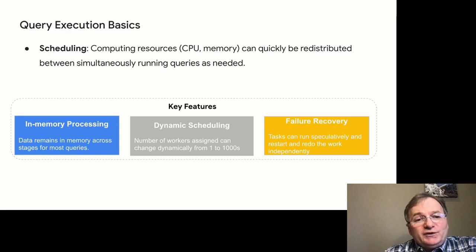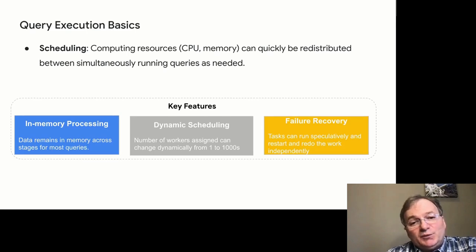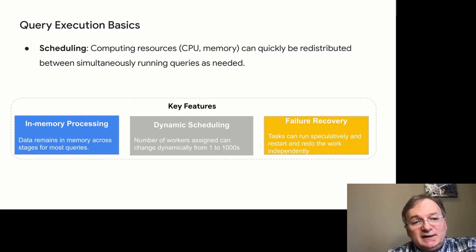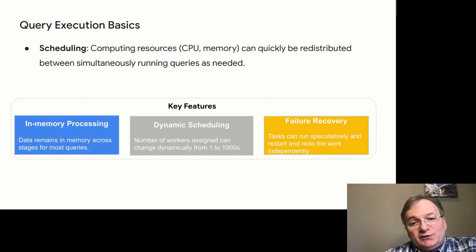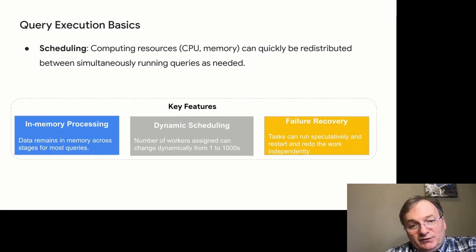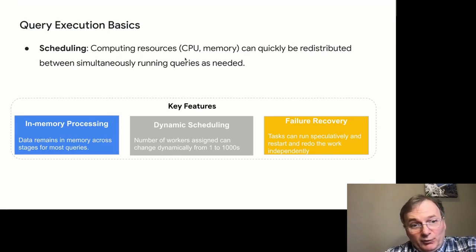We will go into more details about dynamic scheduling. A query is executed using multiple stages and each stage has multiple tasks. The number of workers processing those tasks is very flexible and can change in a matter of seconds from anywhere between one worker to many thousands of workers. For failure recovery, stage tasks can be restarted or executed speculatively. This helps maintain high performance even if we have rare hardware problems in a highly distributed environment. If one computer becomes less responsive, we can simply speculatively start task execution in another location, even after a slight delay — this is why hardware problems won't affect query performance.